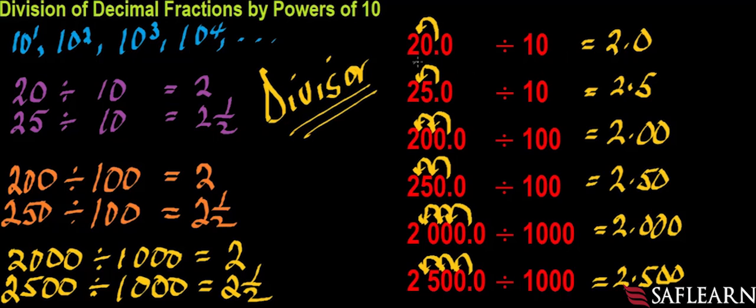So, here, we're using 10 to divide 20. We're using 100 to divide 200. We're using 10 to divide 25. So, 10 is a divisor. 100 is a divisor. And 1,000 is a divisor. And they are all powers of 10.